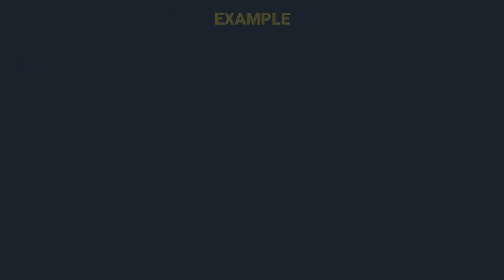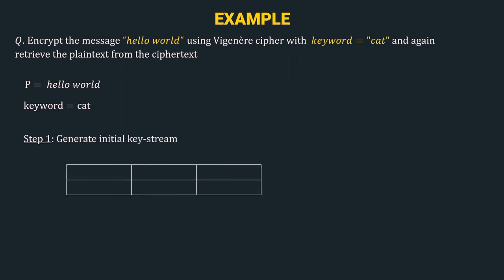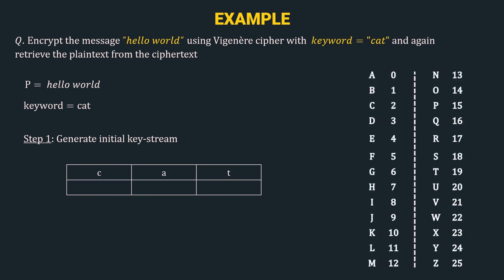Let's solve an example. We will encrypt the message 'hello world' using Vigenère Cipher with keyword 'cat', and then retrieve the plain text from the cipher text. Step 1 is to generate the initial key stream. The keyword is 'cat', with individual characters c, a, and t. Using the mapping table, c is 2, a is 0, and t is 19. So the initial key stream is 2, 0, 19.